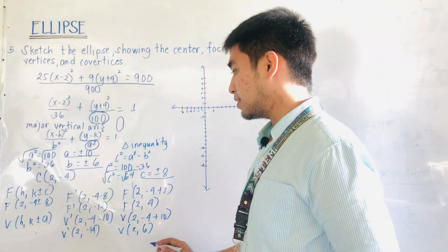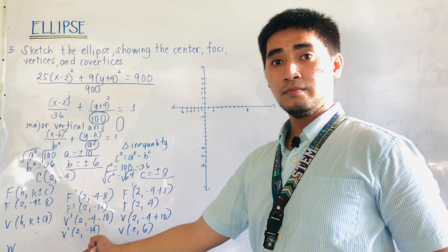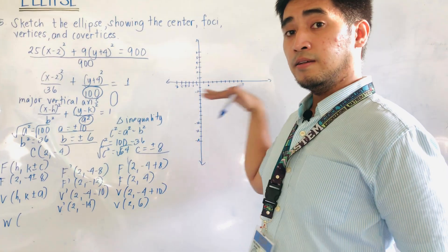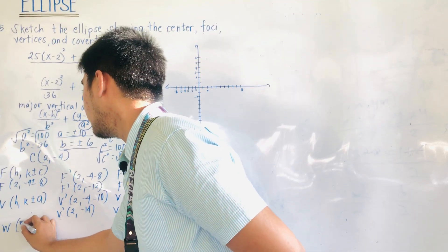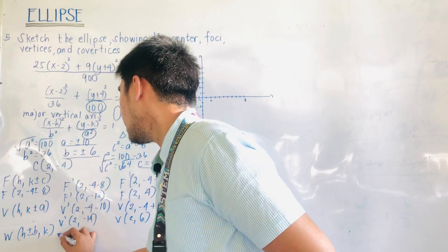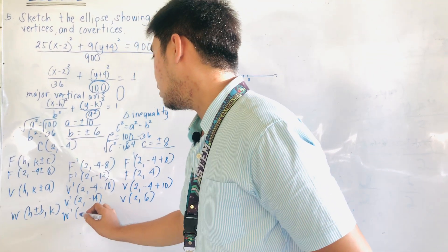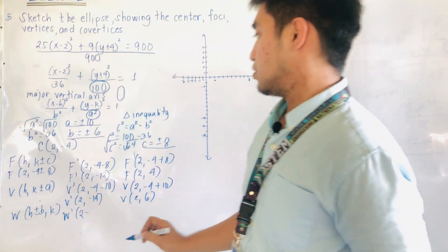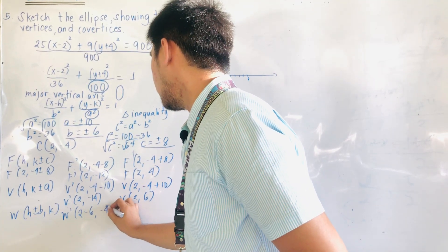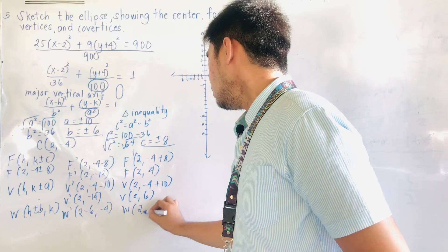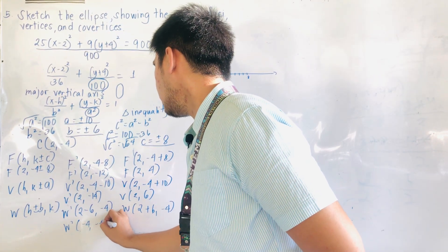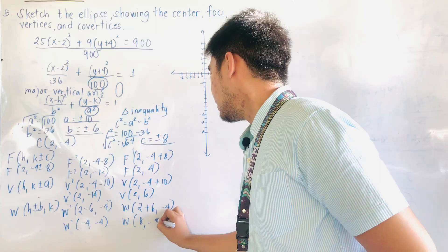For the co-vertices, W is located on the horizontal axis. The formula is (h ± b, k). So W prime equals (2 minus 6, −4), which is (−4, −4). And W equals (2 plus 6, −4), which is (8, −4).